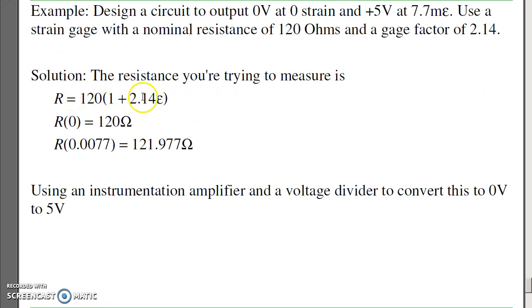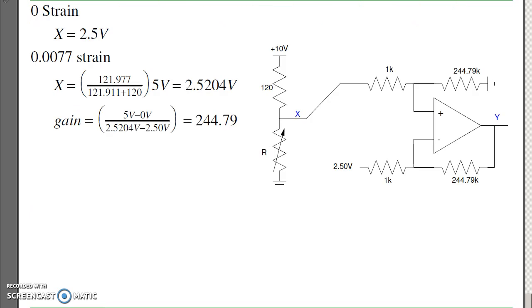If I have a strain gauge, strain gauges typically have relationships like this. It's 120 plus 2.14 times the strain. The strain was 0.0077. Plug it in, I'll have resistance going from 120 ohms to 121.9 ohms. Not a lot, but it is there. To amplify that to 0 to 5 volts, I need an instrumentation amplifier. The gain I need is change in output over change in input. The output changes by 5 volts as the input changes by 2.5 volts. So we need a gain of 244. The offset, I want the output to be 0 at 0 strain. This is 2.5 volts at 0 strain. So that's 2.5. Typically made with a voltage divider as well. And I want the output to go up as x goes up. So in this case, the connected plus output. This will be a circuit that outputs 0 to 5 volts as the strain goes from 0 to 0.0077.